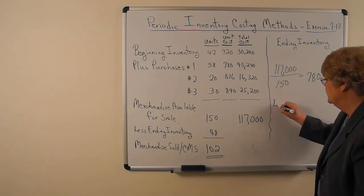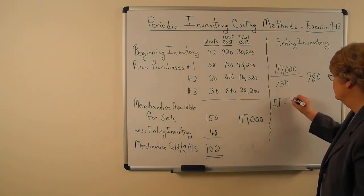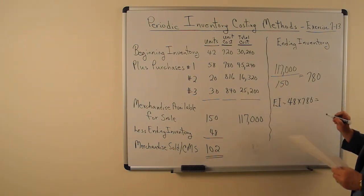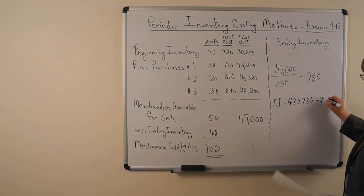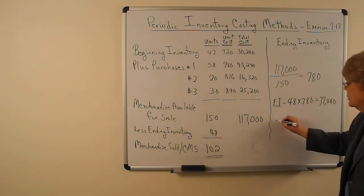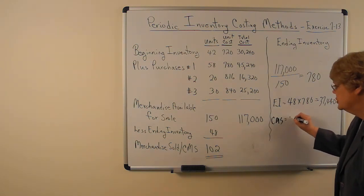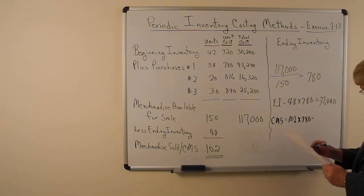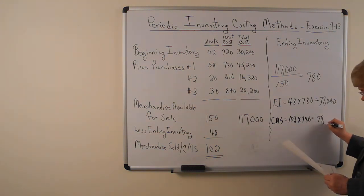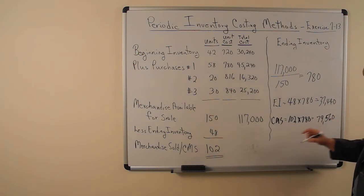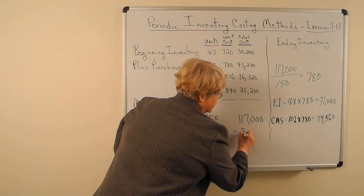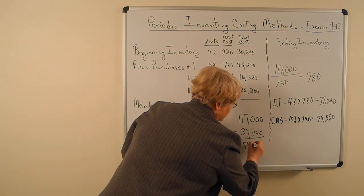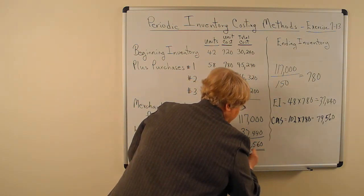$117,000 divided by 150 units is $780 per unit. So ending inventory is 48 units times $780, which equals $37,440. You can also easily calculate cost of merchandise sold: 102 units sold times $780 equals $79,560. You could also plug the $37,440 into your formula to get the same $79,560 — that's just a way to verify it.